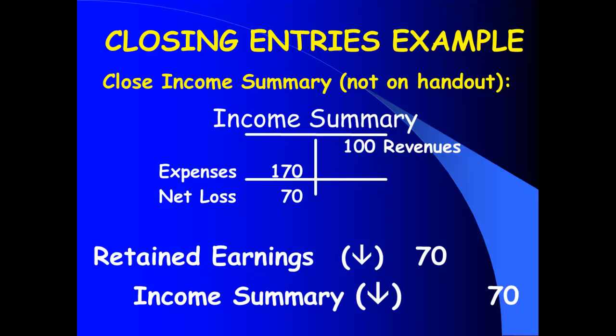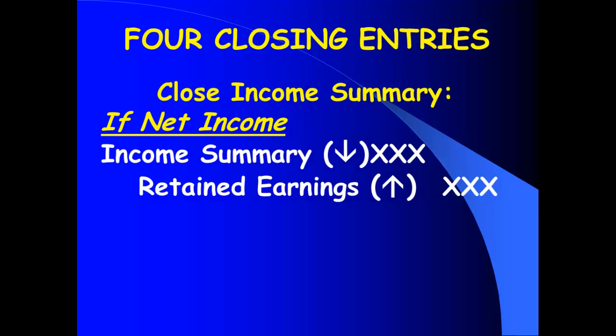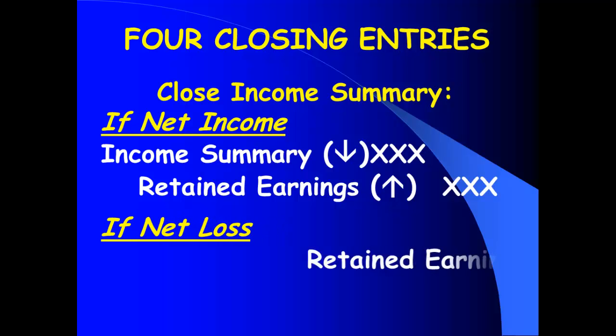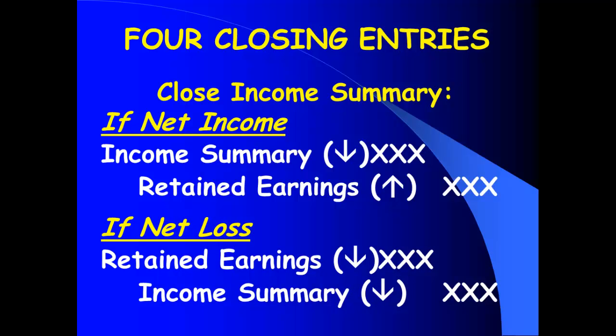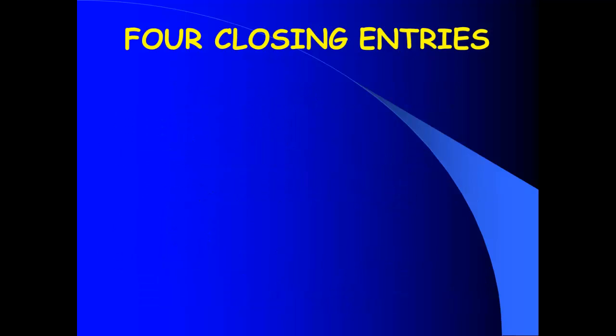So on this third entry, you're going to do whatever it takes to close out Income Summary. When you finish that entry, think about what impact it had on retained earnings and ask: does it make sense? If I had a net income, I should find retained earnings going up. If I had a net loss, I should find retained earnings going down. The third journal entry takes one of two forms: net income — debit Income Summary, credit retained earnings; net loss — credit Income Summary, debit retained earnings.